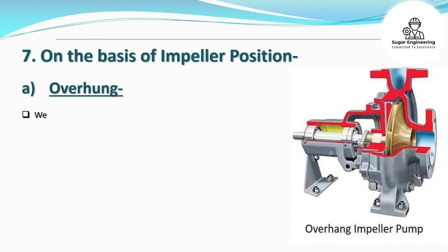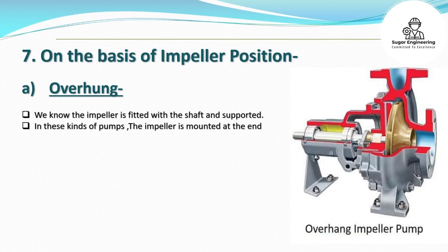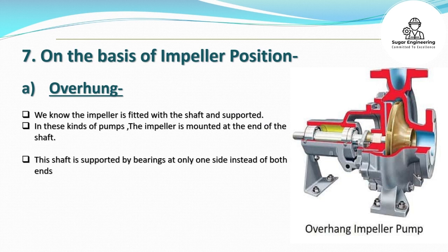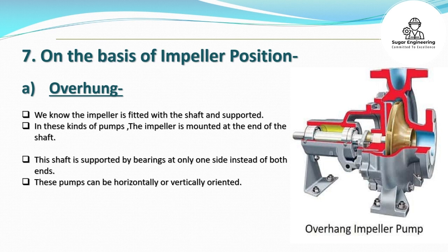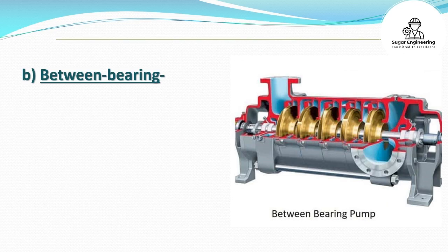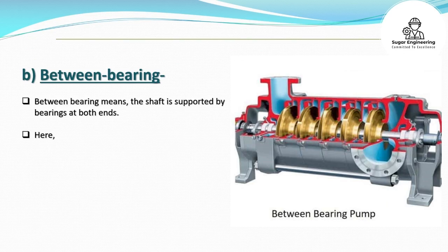On the basis of impeller position: A. Overhung — the impeller is mounted at the end of the shaft. The shaft is supported by bearings at only one side instead of both ends. These pumps can be horizontally or vertically oriented. B. Between bearing — the shaft is supported by bearings at both ends, and the impeller is located between the bearings.